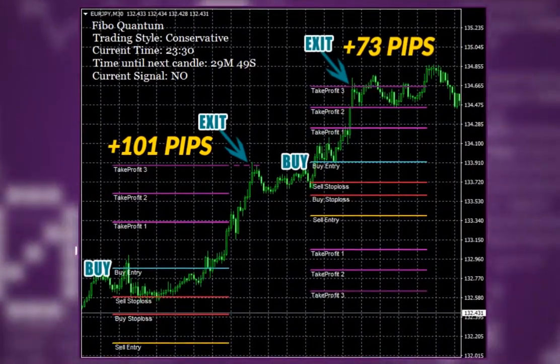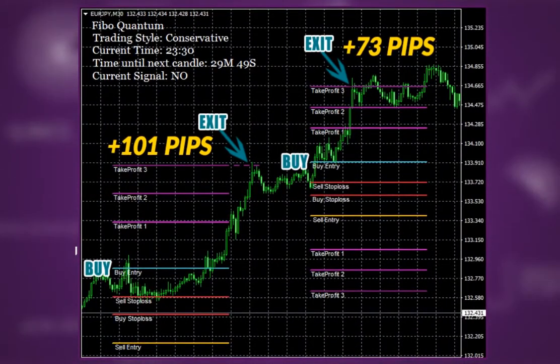Euro, Japanese Yen, 2 quick winners, 101 and 73 pips.